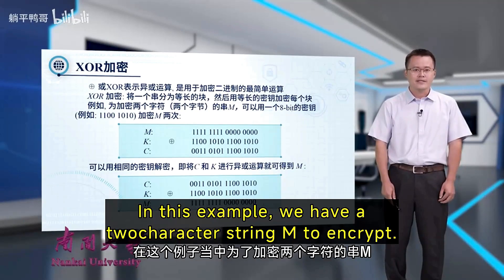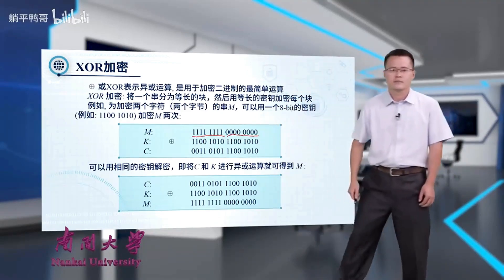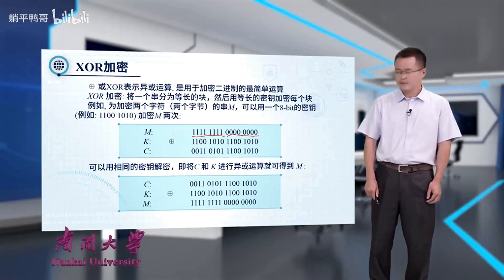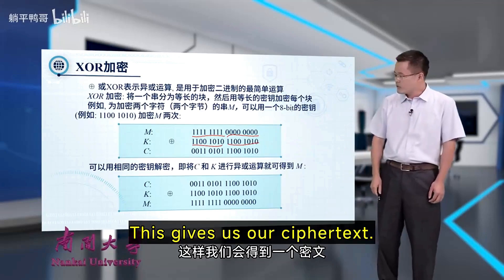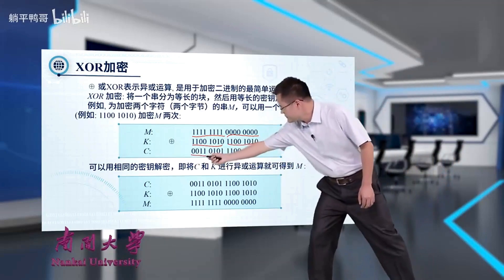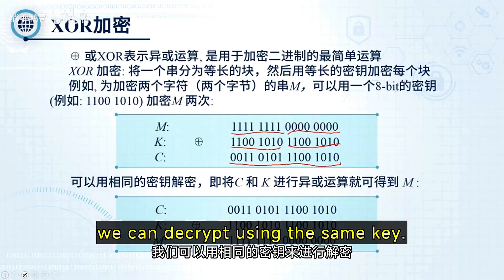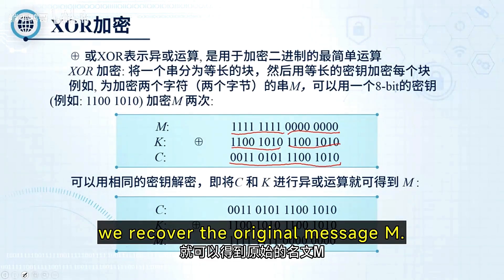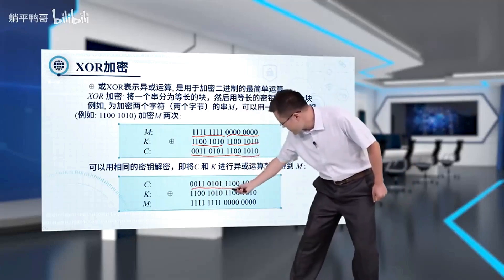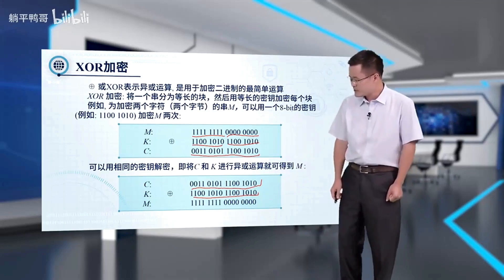Let's look at an example. We have a two-character string M to encrypt. We'll use an 8-bit key. We'll XOR M twice, and this gives us our ciphertext C. The ciphertext C corresponds to the original message M. In XOR encryption, we can decrypt using the same key by XORing C with K, and we recover the original message M.